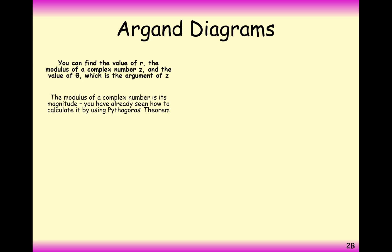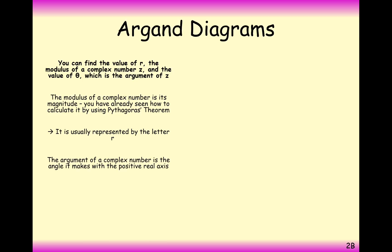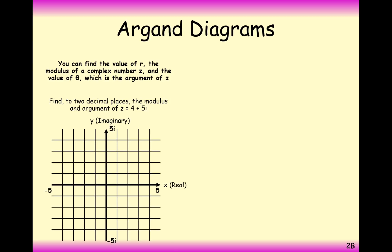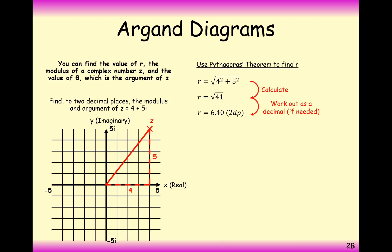When working with complex numbers, it's really useful to draw them on an Argand diagram before starting. So let's draw 4 plus 5i — it goes up here. The modulus is the straight line distance between the origin and your complex number, so we use Pythagoras' theorem: the square root of 4 squared plus 5 squared gives us the square root of 41, or 6.40 to two decimal places.